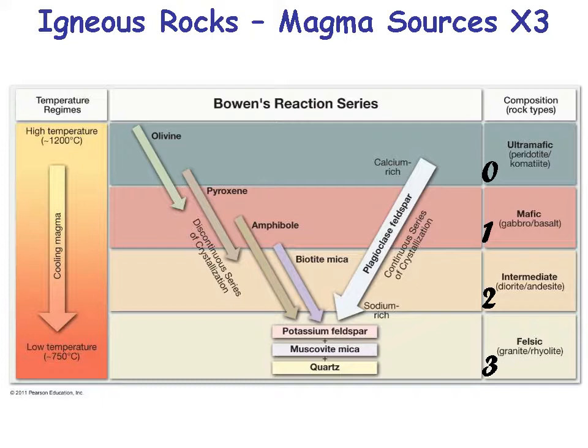If you partially melt a mafic rock — gabbro or basalt — you get a diorite or andesite that has a lot of amphibole and biotite mica. And if you partially melt the intermediate rock, you get a felsic or granitic rock with lots of potassium feldspar, muscovite mica, and quartz. Notice the calcium-rich line on the right: some magmas have lots more calcium, so you get plagioclase feldspar in the minerals crystallized from that magma.